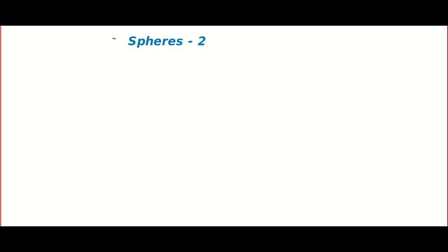Hello friends, welcome to Susan and John Mad Tube. This is the second video on spheres. I forgot to mention one basic formula they may ask a simple question based on. Sometimes they will give you the endpoints of the diameter — one point is (x₁, y₁, z₁) and another point is (x₂, y₂, z₂). Remember, a circle or a sphere will have infinite number of diameters.